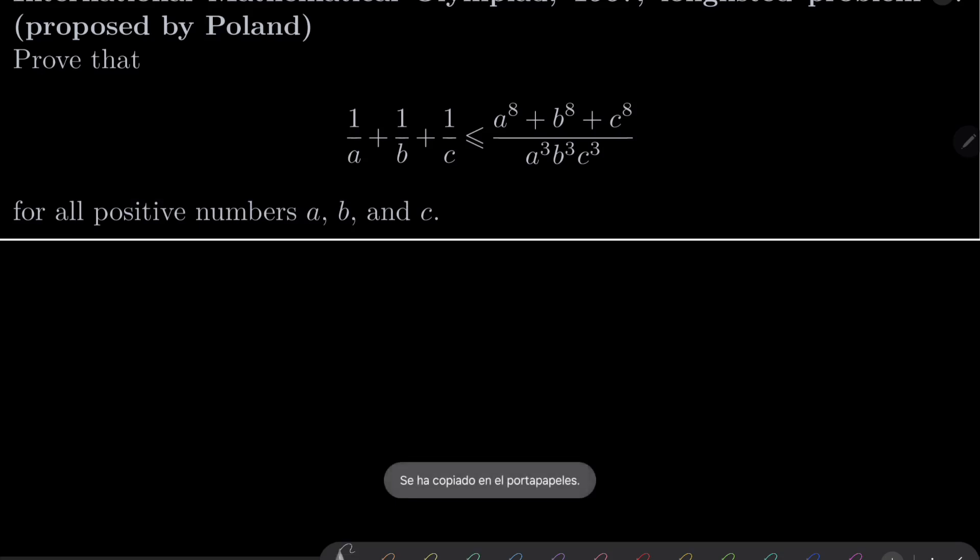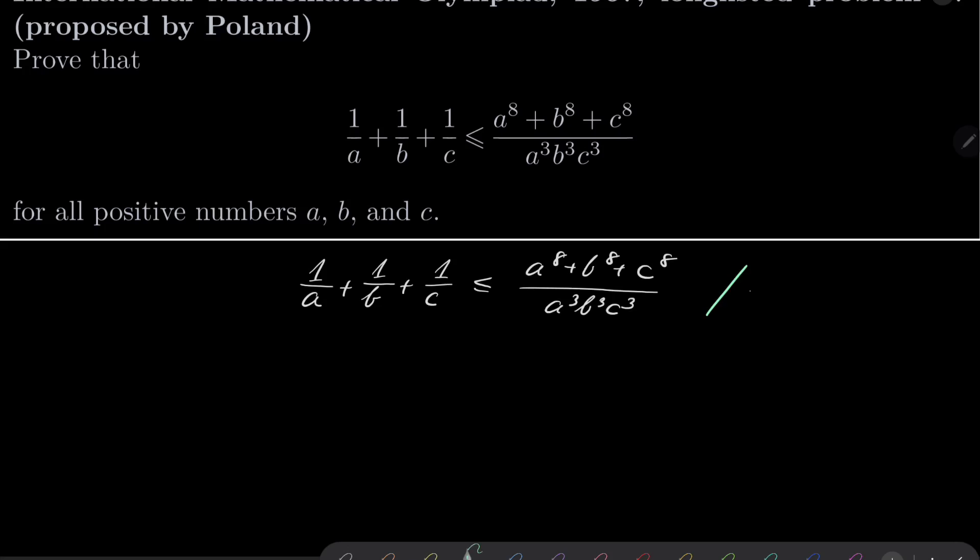Alright, so first of all let's take our inequality which we wish to demonstrate and get rid of the denominators. So I will take this inequality and multiply on both sides by a³b³c³.